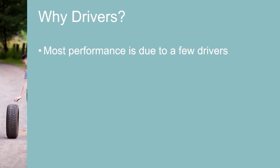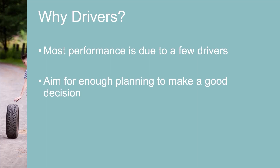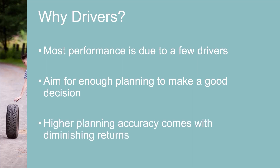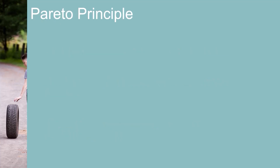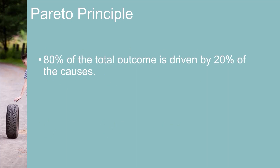Most of the variability in financial performance can be traced to a few key drivers. All companies have limited planning resources — you're aiming for enough investment in planning to make good decisions, not to create the perfect plan. Besides, trying to achieve accuracy at extremely high levels in the face of an uncertain future is sheer madness. Higher investments in planning accuracy come with diminishing returns. A related concept is the Pareto Principle, which states that 80% of the total outcome is driven by 20% of the causes.